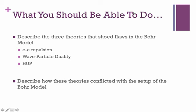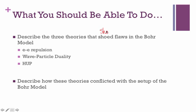To wrap things up, here's a quick list of what you should be able to do. You should be able to describe the three theories that showed flaws in the Bohr model: electron-electron repulsion, wave-particle duality, and Heisenberg's uncertainty principle. For all three, you should be able to relate them back to the Bohr model and explain why they showed it was lacking in its description of atomic behavior. In class, we'll spend more time on these theories — they've introduced some very fascinating physics and philosophical discussions, especially Heisenberg's uncertainty principle.